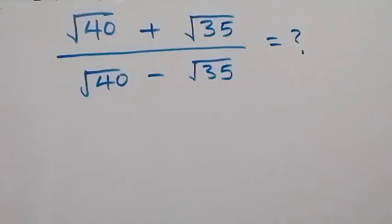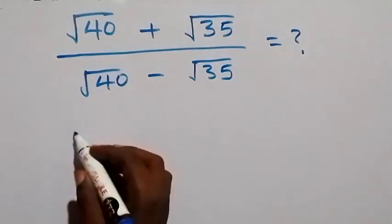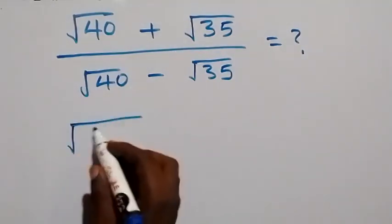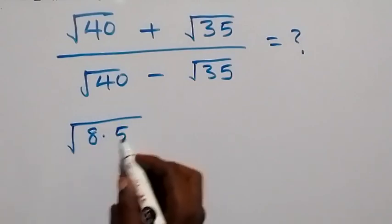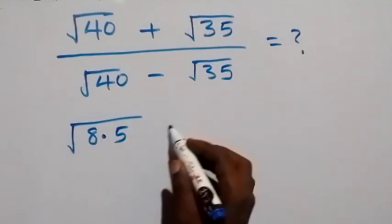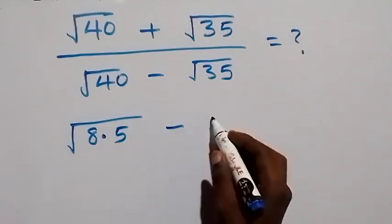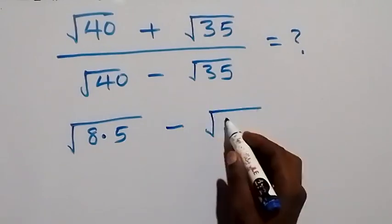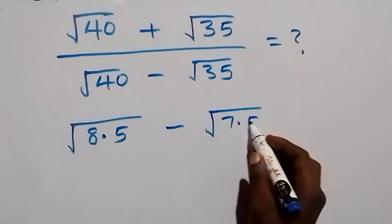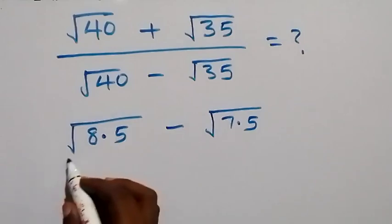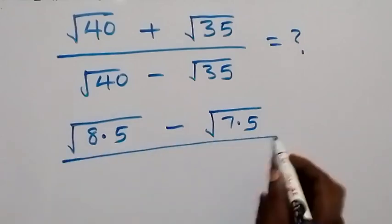Hello, you are welcome. How to solve this nice math problem: we have root 40 plus root 35 divided by root 40 minus root 35. Here we can separate this as root 8 times 5, since 8 times 5 is 40, then minus here we can write root 7 times 5, since 7 times 5 is 35.